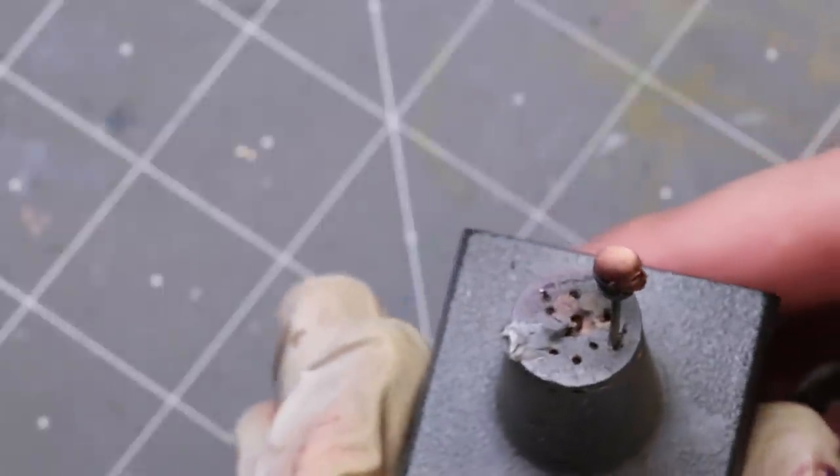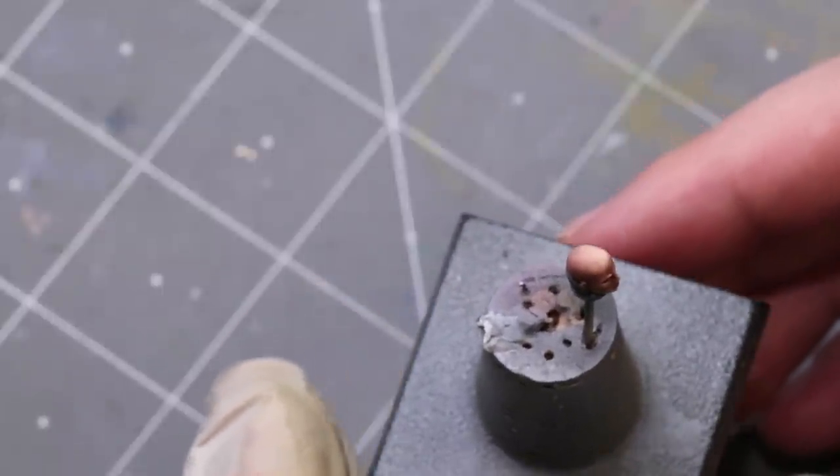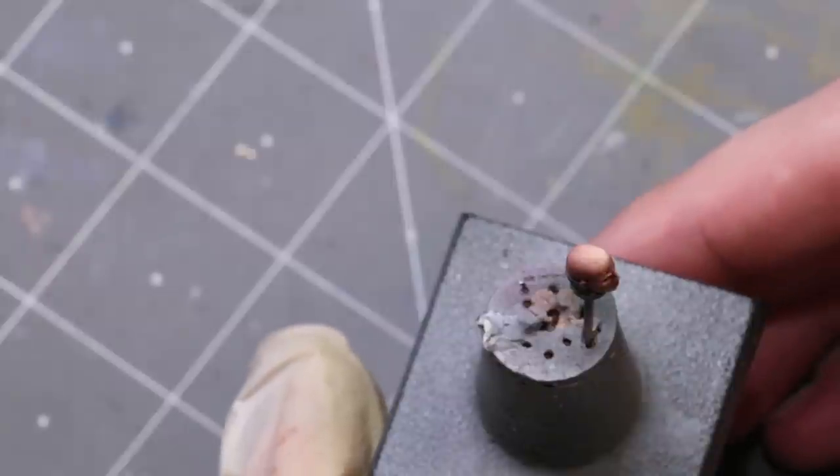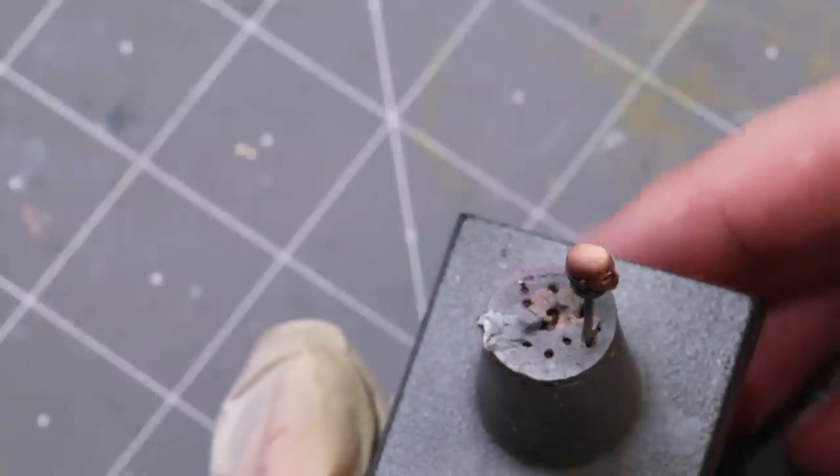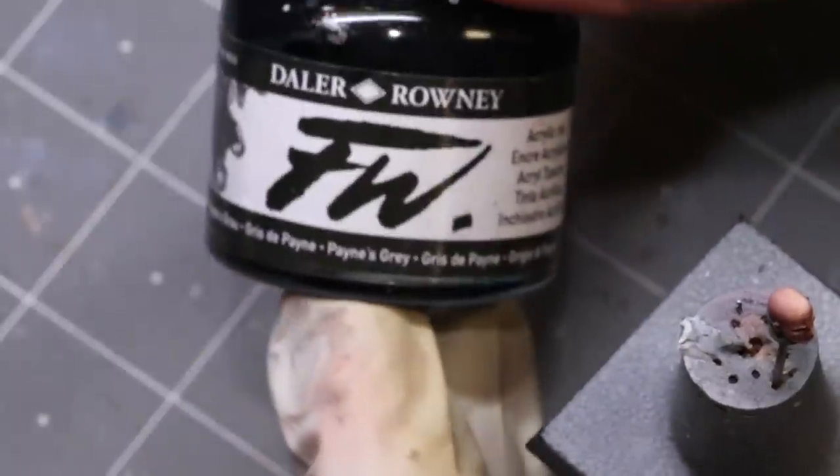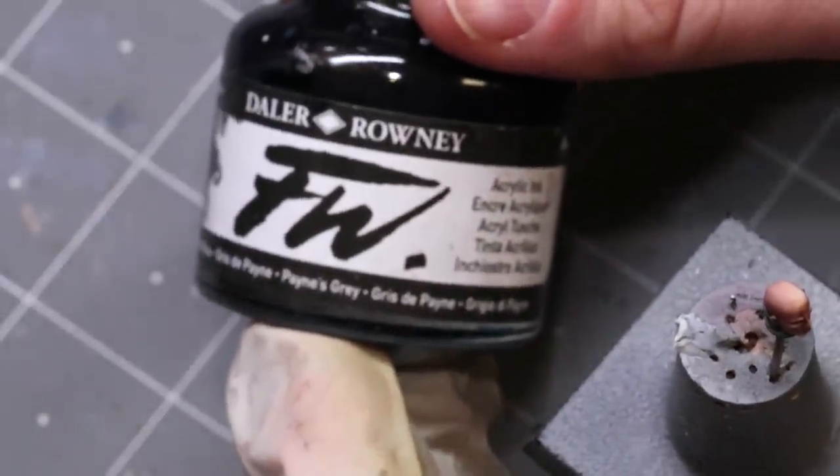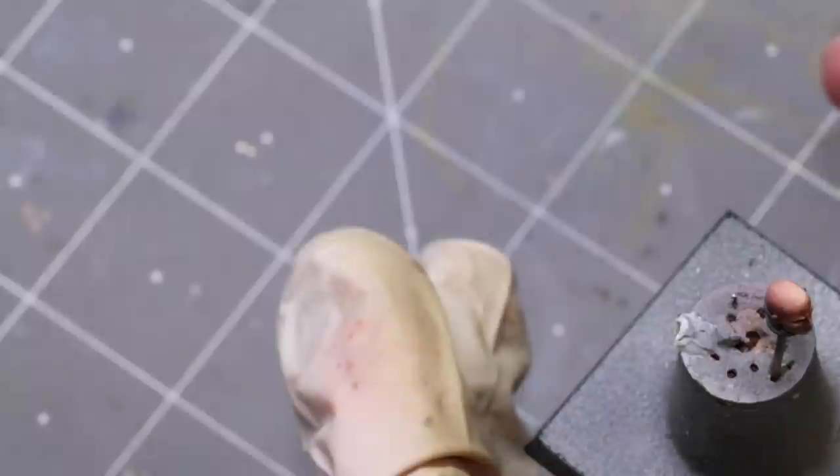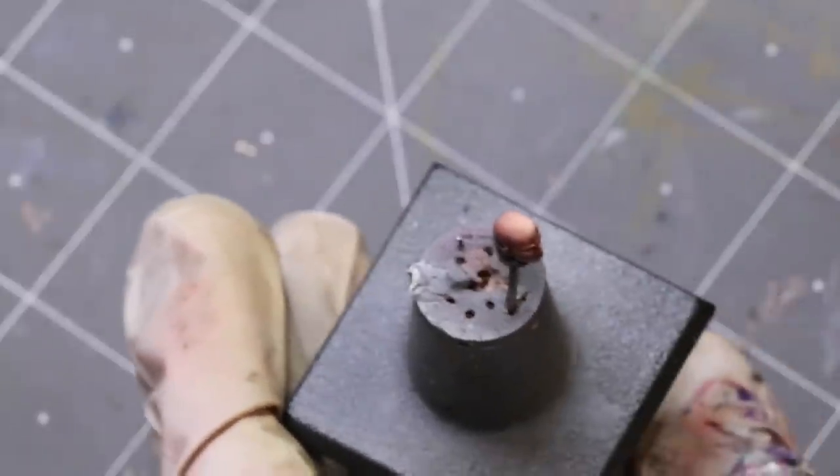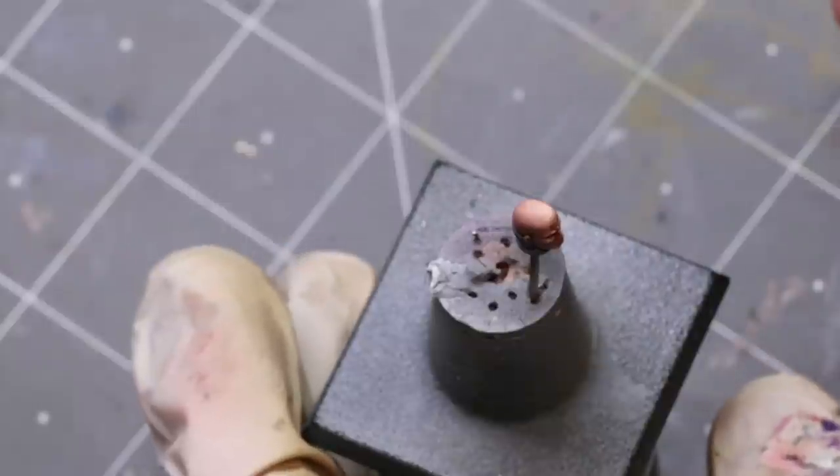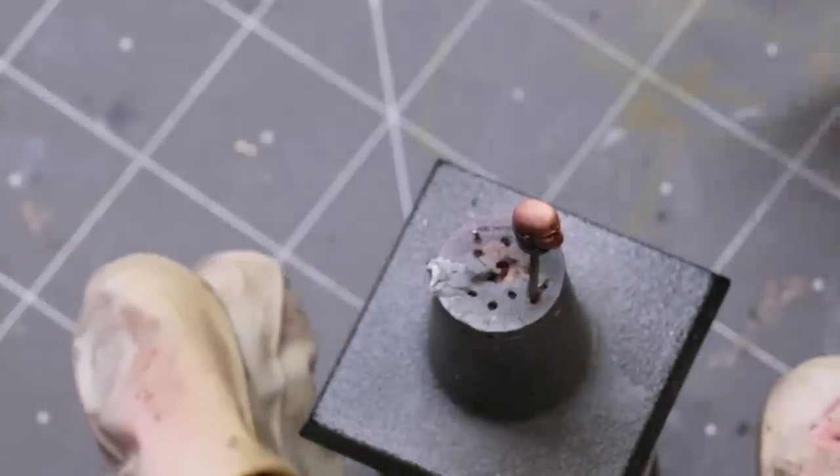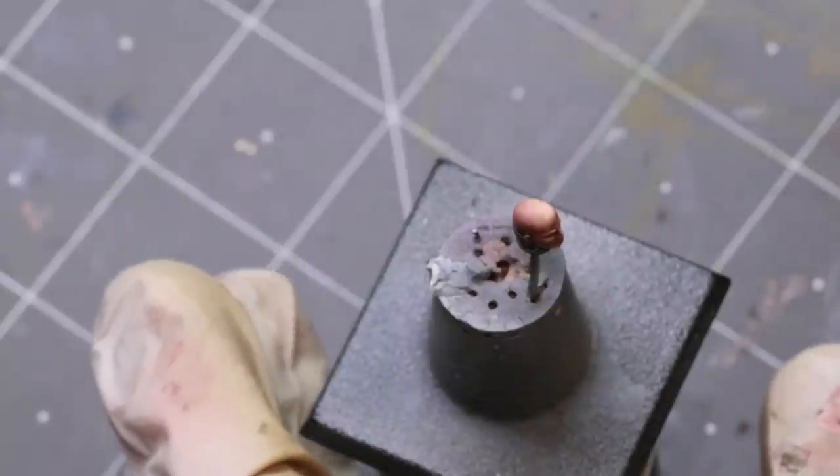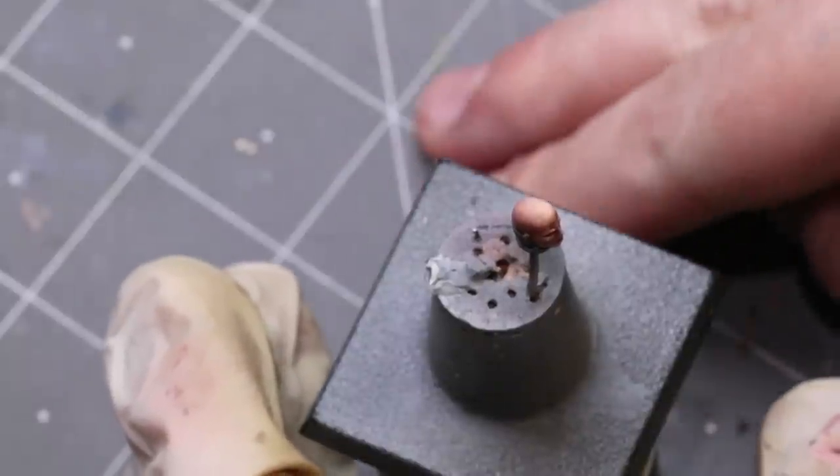What you need to do a nice five o'clock shadow is actually something that's going to seem strange—you need some kind of very dark blue. This can be any kind of deep blue color. If you've got something like a Daler-Rowney Payne's gray ink, this is perfect. If you don't have this particular ink, you can use a very deep navy blue paint. If you don't have that, you can take your Nuln oil, put it out on a palette, mix it with a little bit of blue shade like Drakenhof Nightshade, mix the two together, and then thin it down.